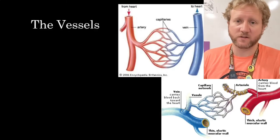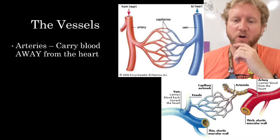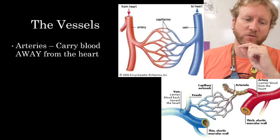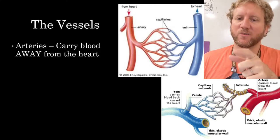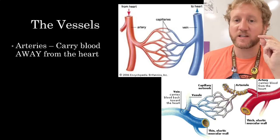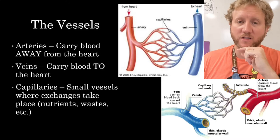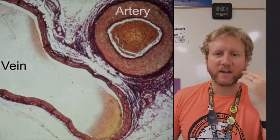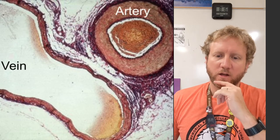So we've got blood vessels and circulation going on. There are three kinds of vessels. Arteries carry blood away from the heart — that's how you need to think about it, in the direction of blood flow. People commonly think of arteries as carrying oxygenated blood, but as we'll see, that's not always the case. Veins carry blood to the heart, usually deoxygenated, but not always. Capillaries are small vessels where exchange takes place — O2 for carbon dioxide, nutrients for wastes, and so on. This is a cross-sectional view under a microscope showing the different vessels.